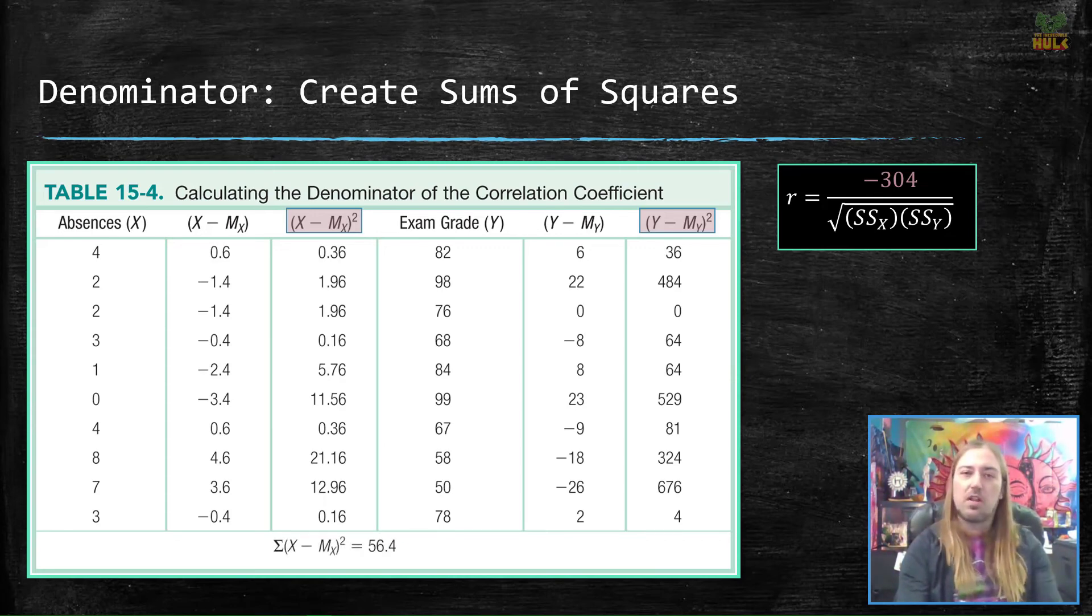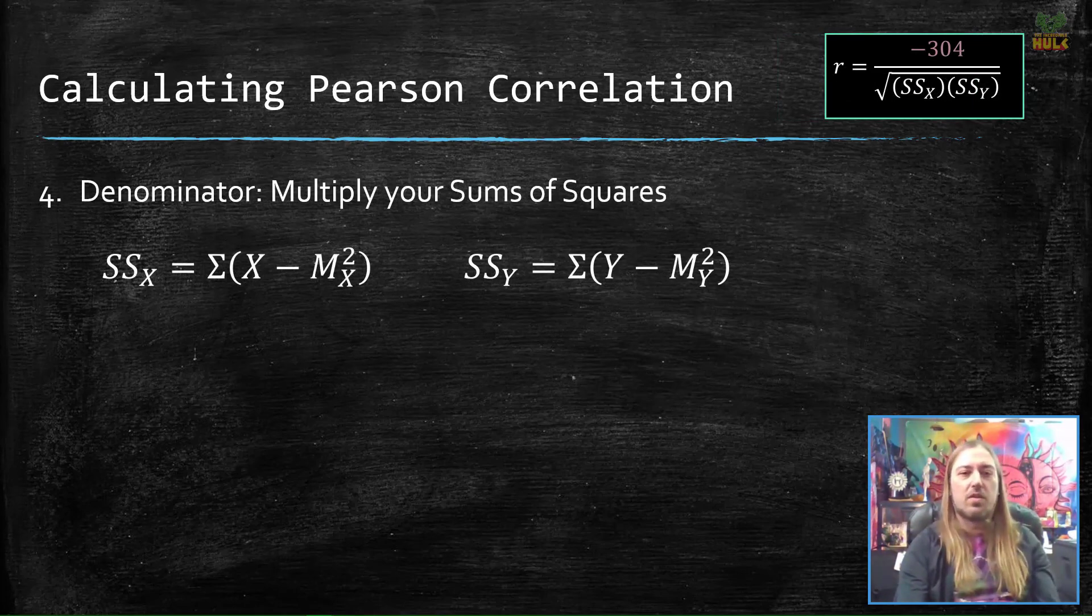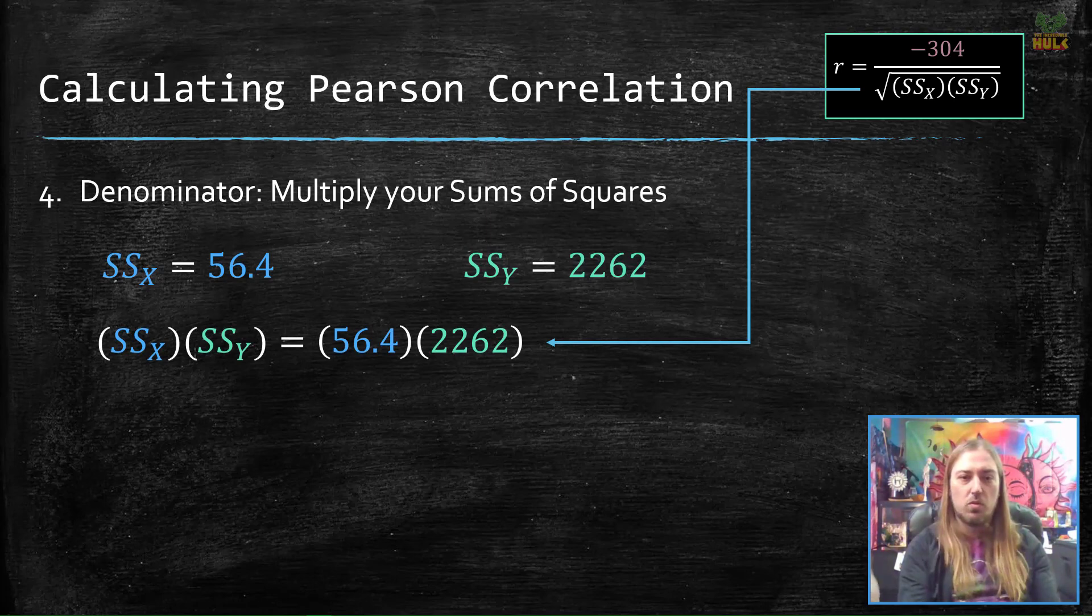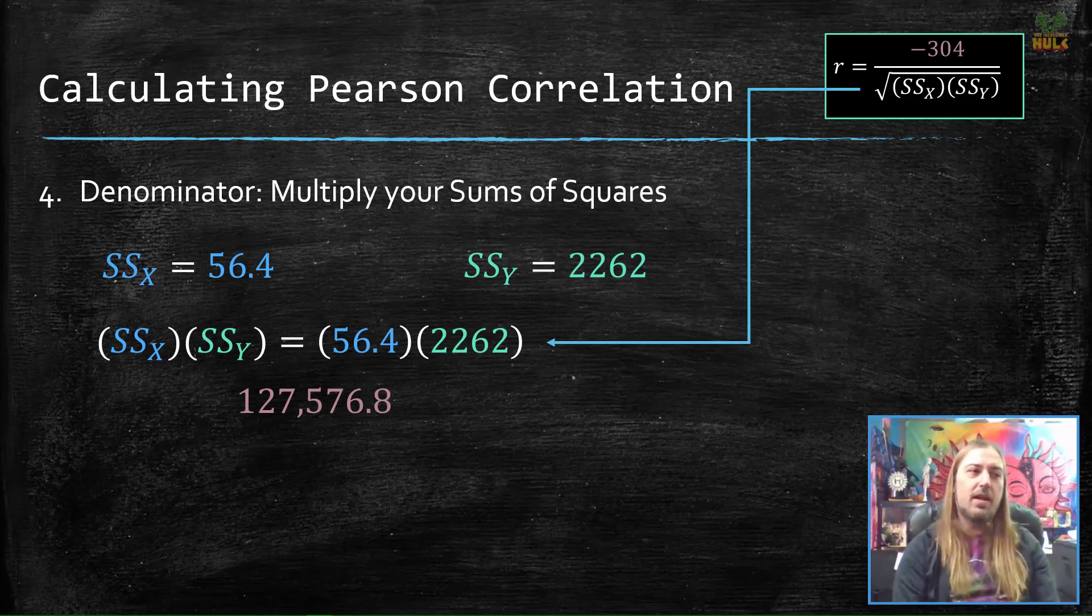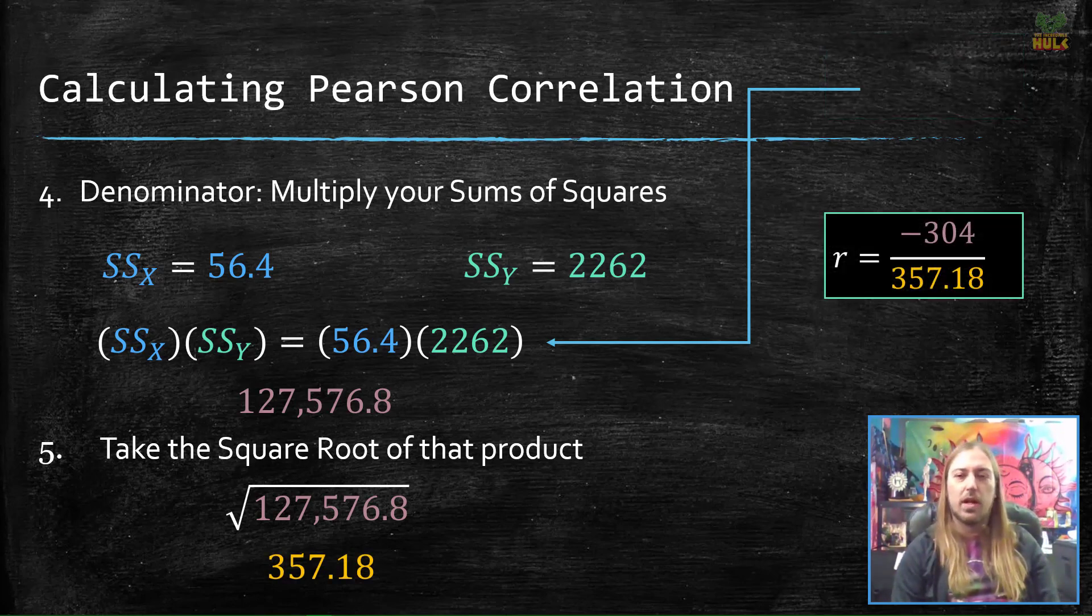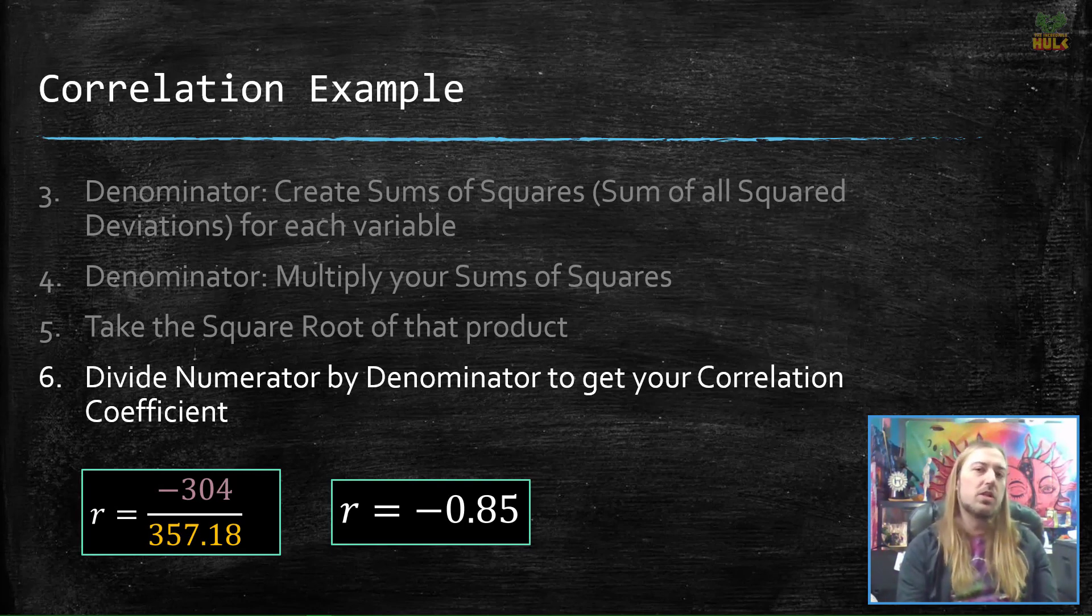So let's add them up and get the sums of squares. 56.4 for the sum of squares x. 2,262 for the sum of squares y. And now it says the next step is to multiply those sums of squares. Sum of squares x, sum of squares y. That was 56.4, 2,262. We are then going to multiply them together and we get 127,576.8. Last step to finishing the denominator, take the square root. So the square root of this big-ass number gives us 357.18. And you can see the equation is basically done. We have r equals negative 304 divided by 357.18. So divide numerator by denominator. We get a correlation of negative 0.85.